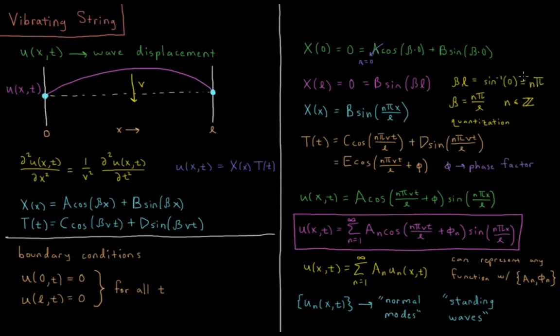Notice that we've got some quantization here which was imposed by our boundary condition. Much like in quantum mechanics, in the classical wave equation even, we see that quantization occurred because we have restrictions, we have boundaries. So this means that our value of beta is equal to n pi over L, an integer times pi divided by the length of our string.